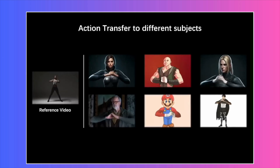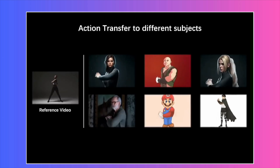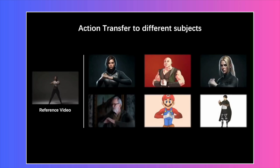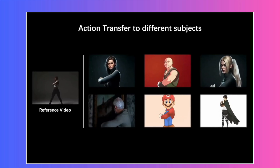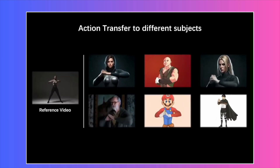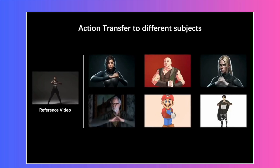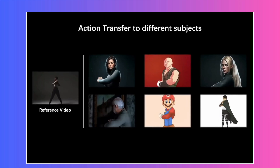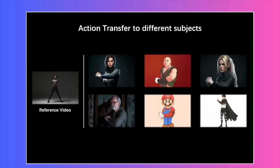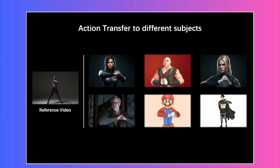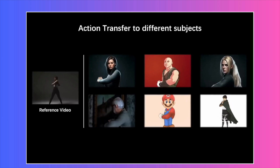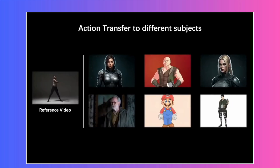You can take a reference video like this one of a woman moving, feed the AI a single picture of any other character, and it will animate that character with the exact same motions. It seriously doesn't matter if your character is a realistic 3D model, a 2D cartoon, or anything in between. The AI maps the movement incredibly well.